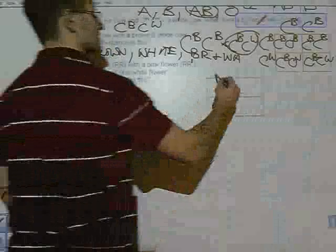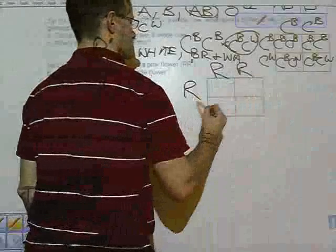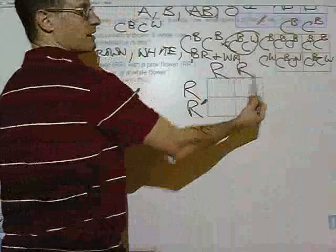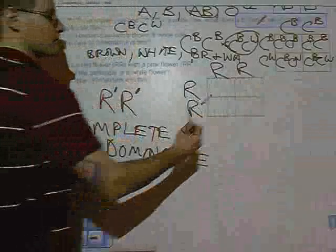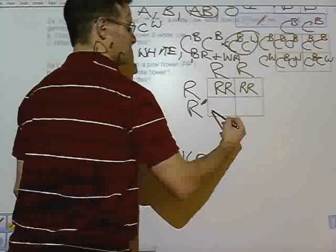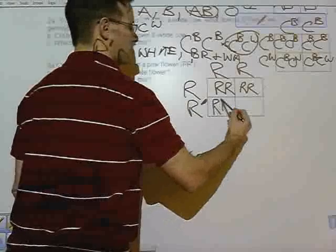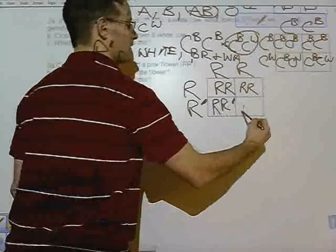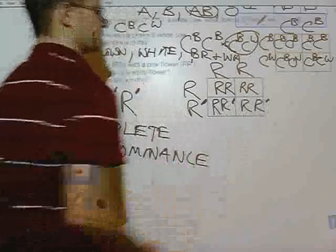So to cross these two: two capital Rs and an R with an R prime, these top two are just going to be R R, bottom two are R R prime. Half of them will be red, half of them will be pink.